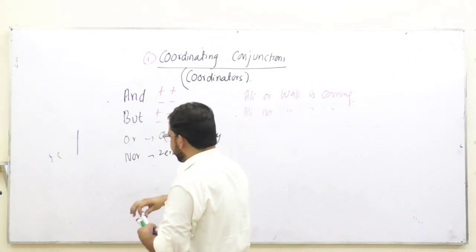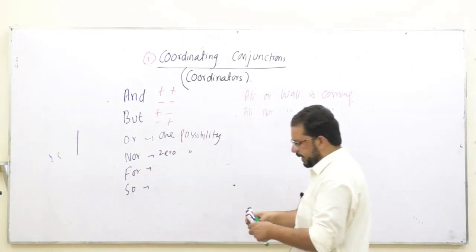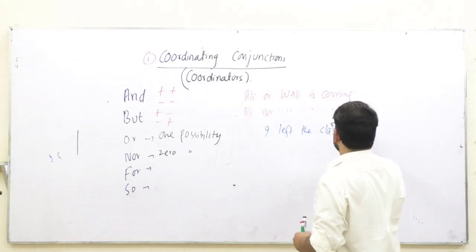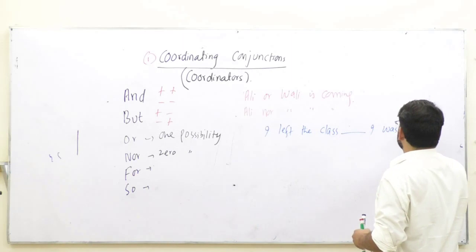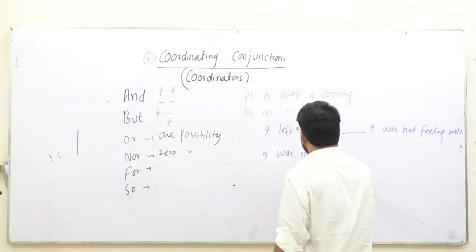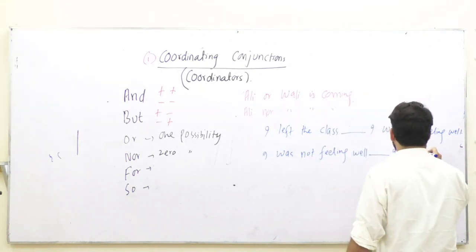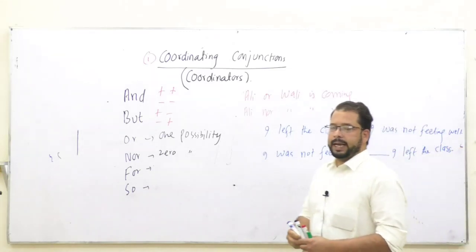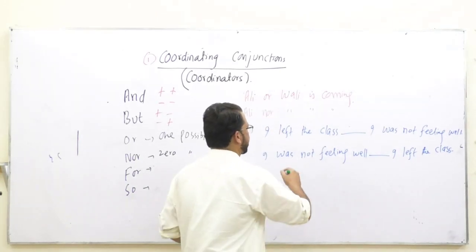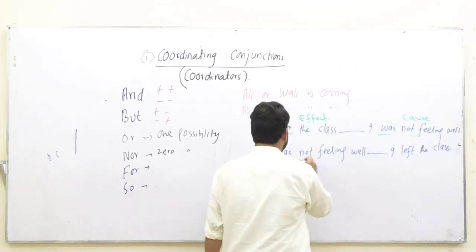Next hamare paas jo hain woh hain 'for' aur 'so'. Dekhen agar main yahan par sentence lagaun: 'I left the class [dash] I was not feeling well.' Aur doosra: 'I was not feeling well [dash] I left the class.' Dekhen wahi wala sentence hai lekin is mein maine sirf shuffle ki hai. Is sentence ke hamare paas do hisse hain — 'I left the class' yeh hamare paas kya hai? Yeh hamare paas effect hai. Aur 'I was not feeling well' yeh hamare paas cause hai.